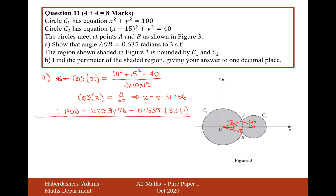Moving on to part B: the region shown in figure 3 is bounded by C1 and C2. Find the perimeter of the region, giving your answer to one decimal place. We'll use the formula arc length equals R theta. For the arc of C1, we have the majority of the arc — everything except the 0.635 angle — so arc C1 equals 10 times (2π minus 0.635).